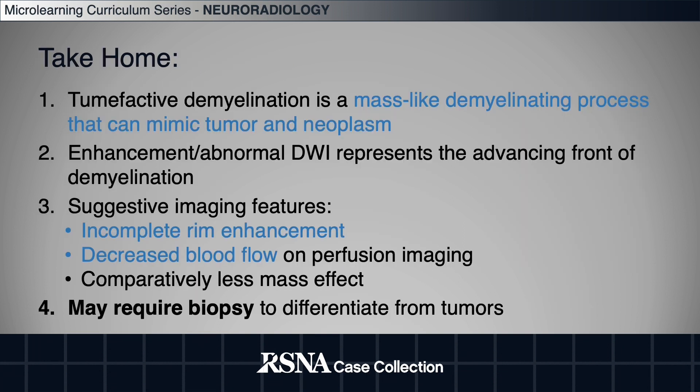The take-home points are: tumefactive demyelination is a mass-like demyelinating process that can mimic tumor and neoplasm. Enhancement with restricted diffusion represents the advancing front of demyelination. Suggestive imaging features are incomplete rim enhancement, decreased blood flow on perfusion imaging, and comparatively less mass effect. Lesions may require biopsy to differentiate them from tumors.